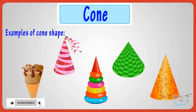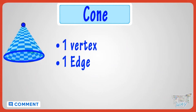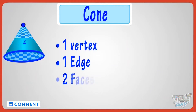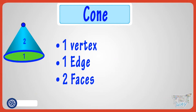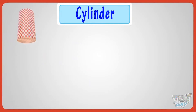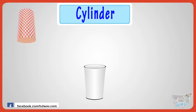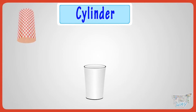So we have learned that a cone is a 3D object with one vertex, one edge, and two faces. Now let's learn another shape — a cylinder. This is a cylinder.